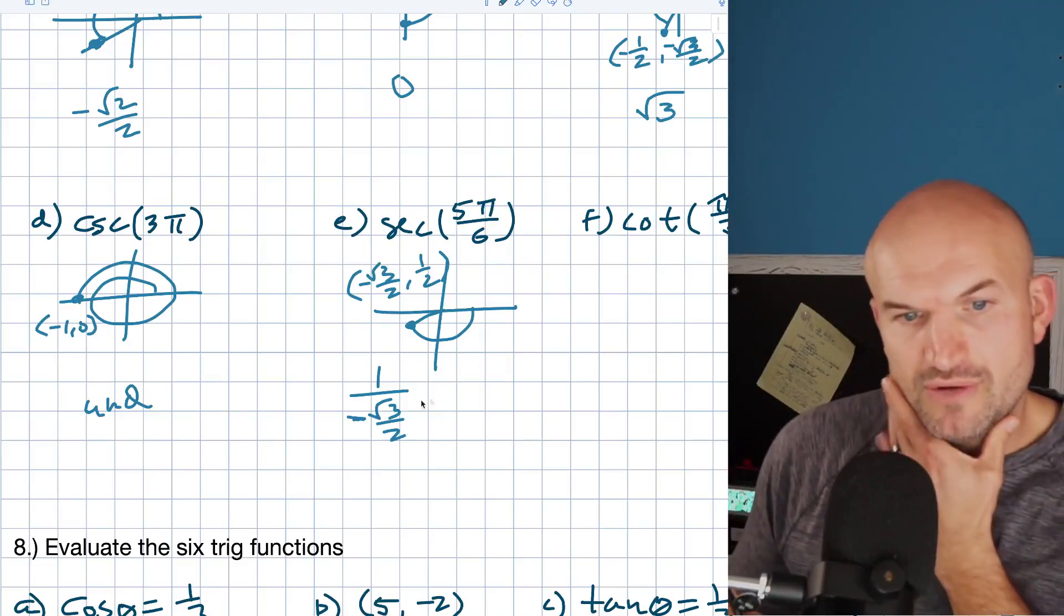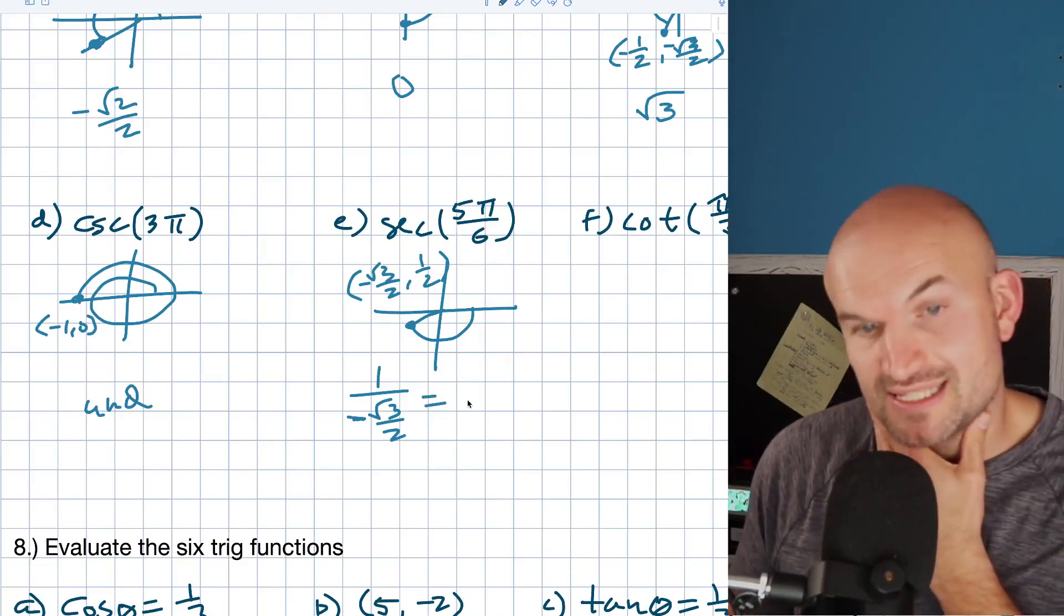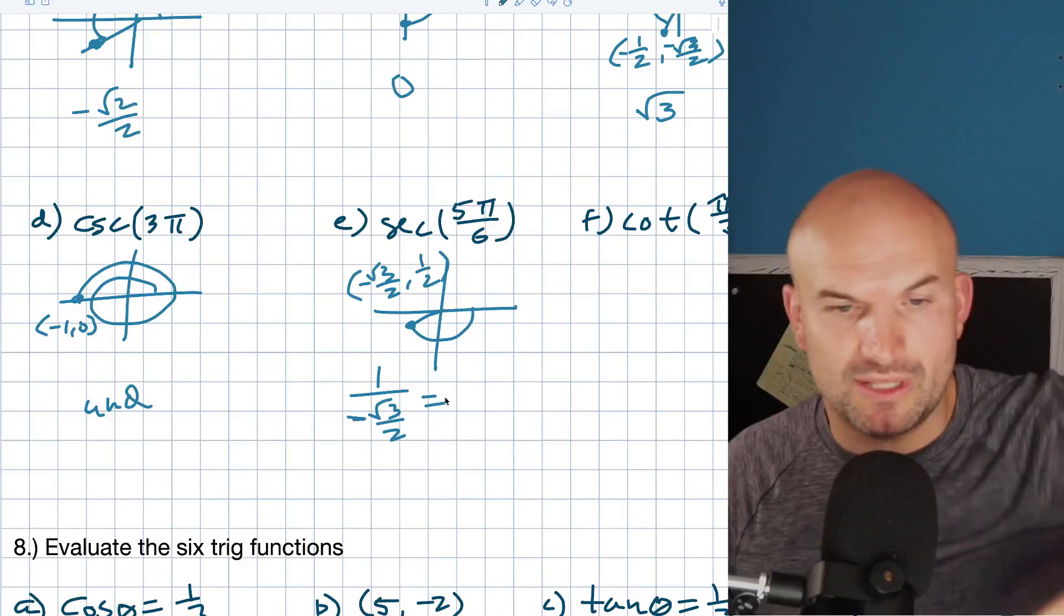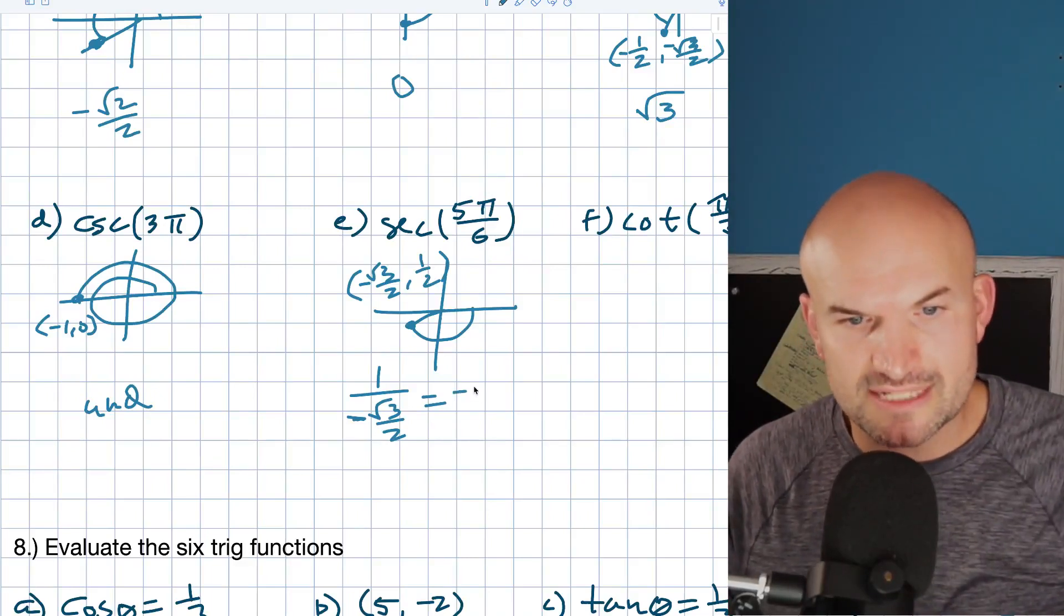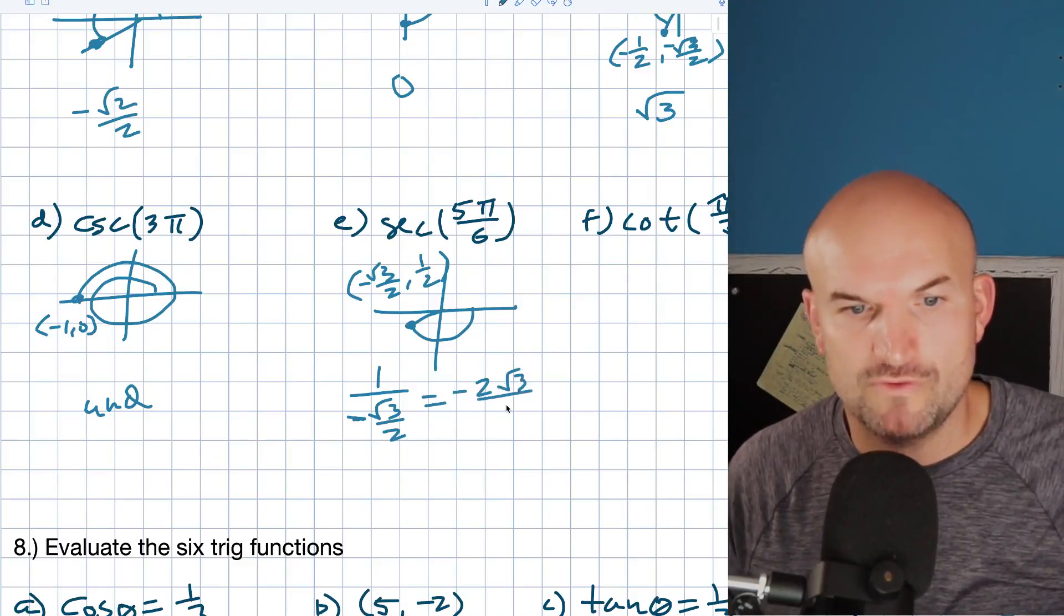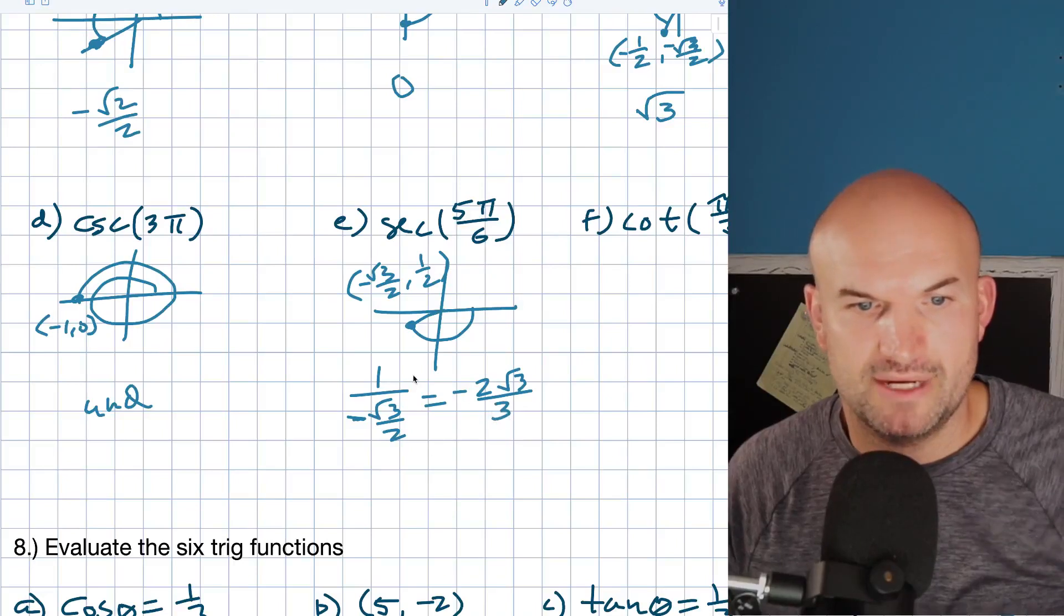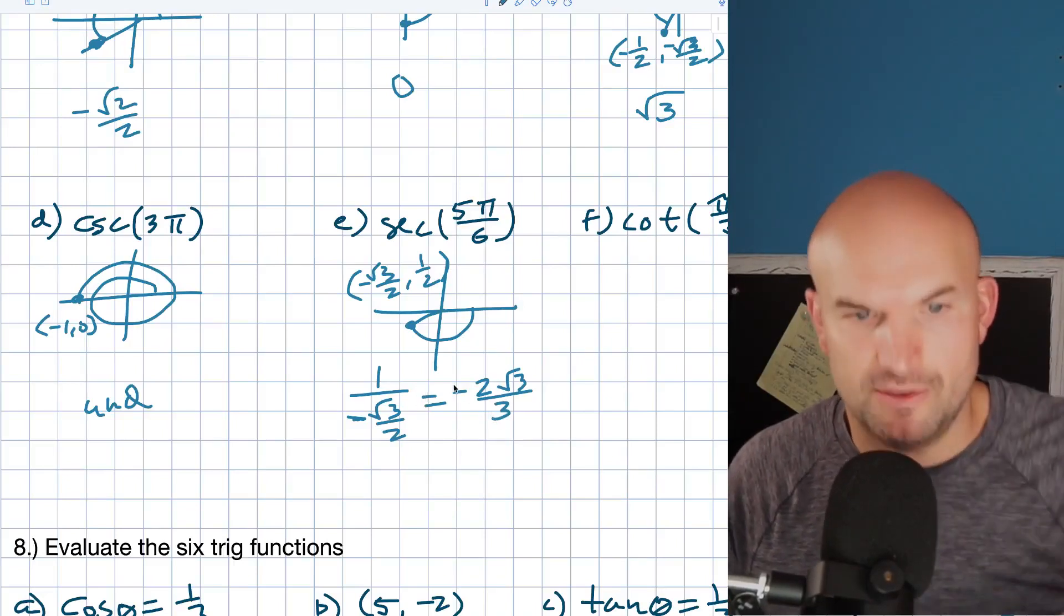So, the cosecant is going to be 1 over a negative square root of 3 over 2. So, negative 1 over square root of 3 over 2. Therefore, remember, rationalize the denominator. Multiply by the reciprocal on top and bottom. That's going to be negative 2 square root of 3 over 3.